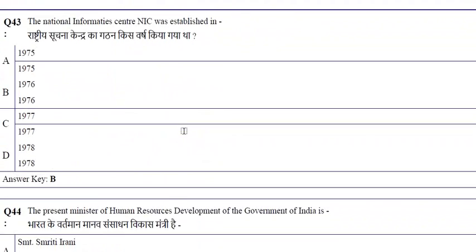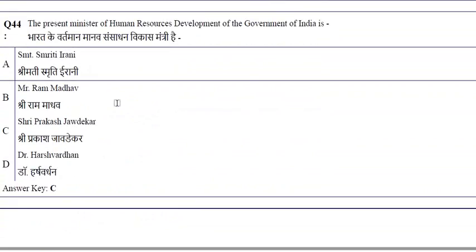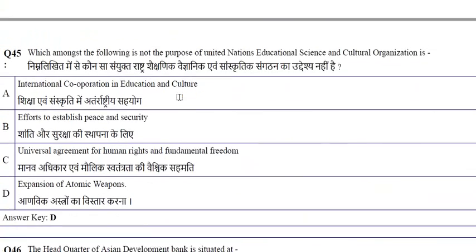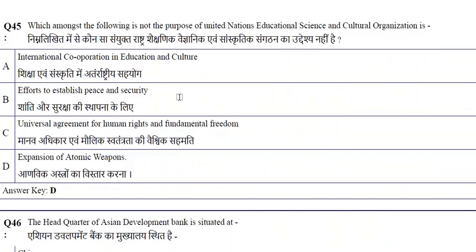The National Informatics Centre (NIC) was established in 1976, during the time of Emergency under Indira Gandhi. The Minister of Human Resource Development of Government of India is Mr. Prakash Javadekar; earlier it was Smriti Irani. Expansion of atomic weapons is not a purpose of UNESCO — its purposes include international cooperation in education and culture, efforts to establish peace and security, and Universal Agreement for Human Rights.